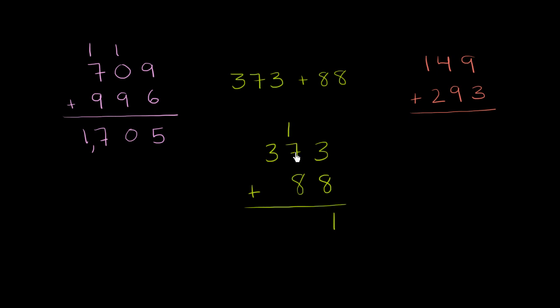1 plus 7 is 8. 8 plus 8 is 16. This is actually 16 tens. What is 16 tens? Well, that's 160. So this 6 is the 60, and then I have 100. 1 plus 3 is 4, but these are actually hundreds, so it's 400. We get 461.